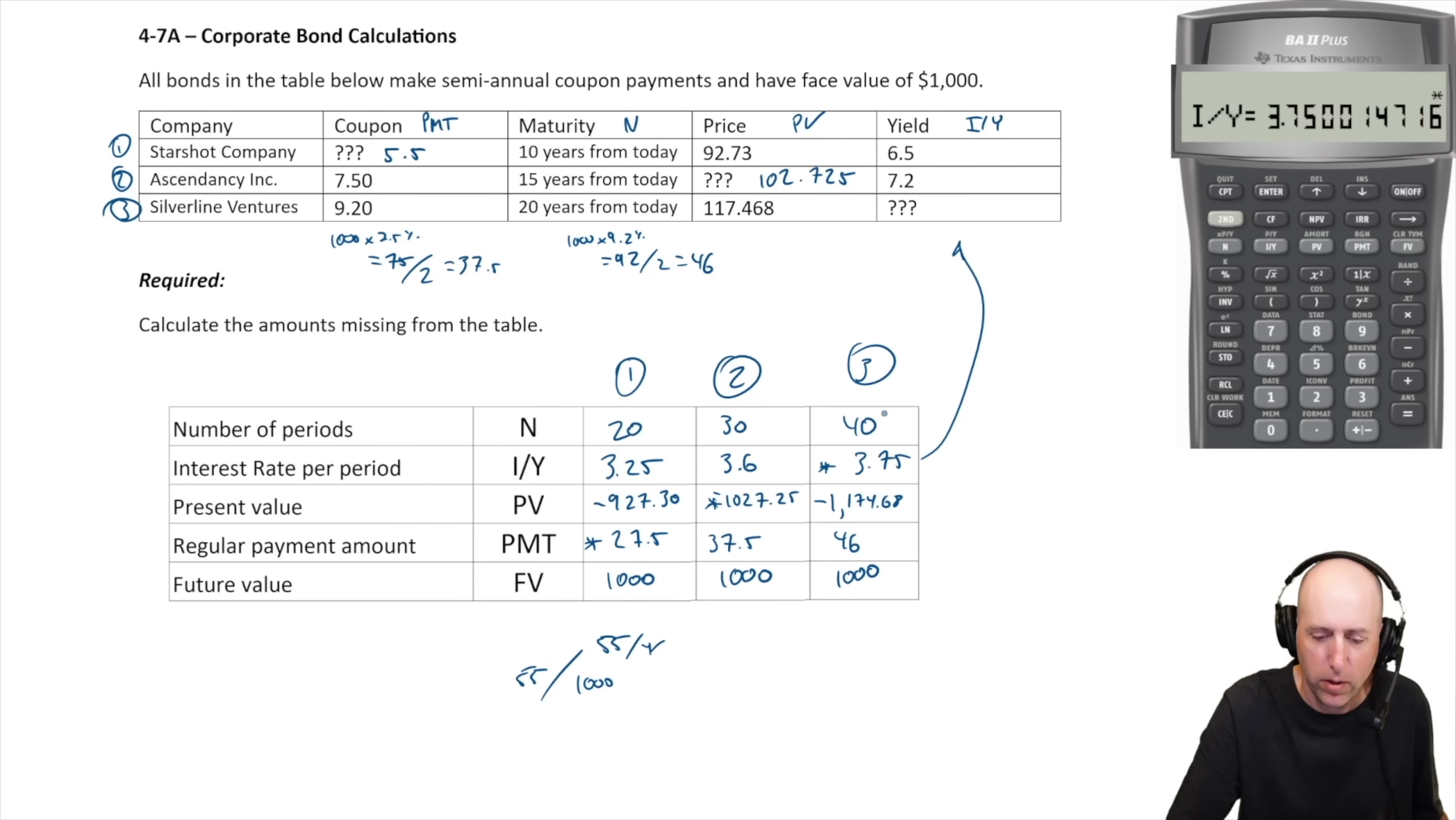Now remember to get it into the table, 3.6 was 7.2 in the table, 3.25 was 6.5 in the table. Well, 3.75 is 7.5 in the table. And there we have it, we've solved them. Our PMT for the first one, or our coupon rather, is 5.5. Our price for the second one is 102.725, and our I/Y for the third one was 7.5%.